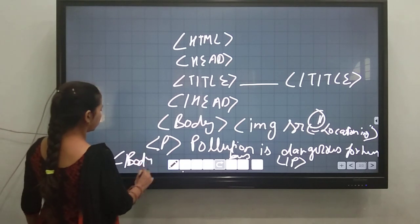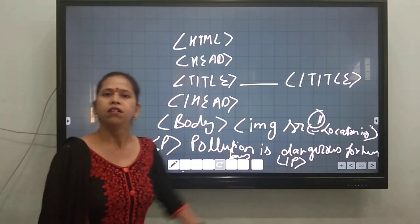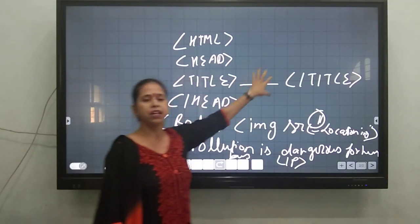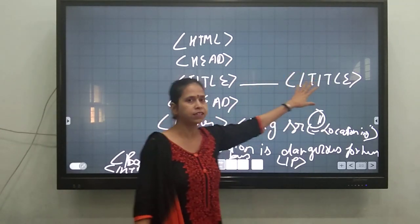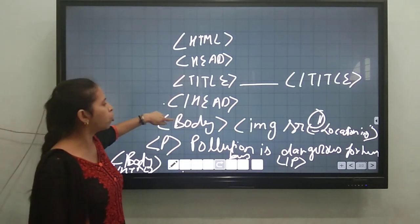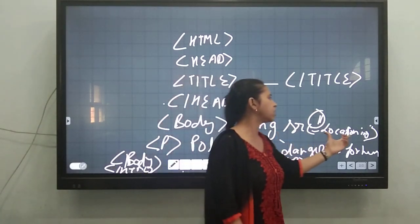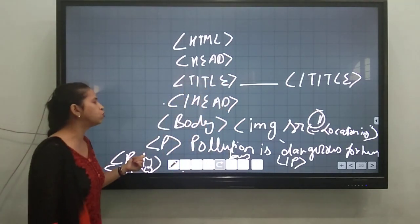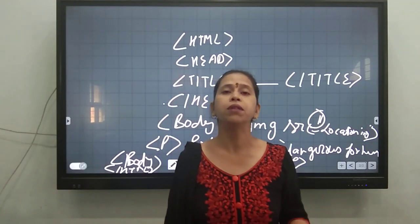And then close the head tag and STML. Then close the name of the particular webpage — whatever you want, you can give — and then close the title tag. After that, the head has to be closed. Then the body will be reopened. You have to put the particular tag img src and give the location of the image inside a double quoted sign. After that, use the paragraph tag and write whatever paragraph you want to write for the image.